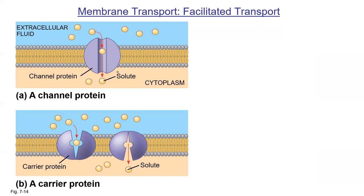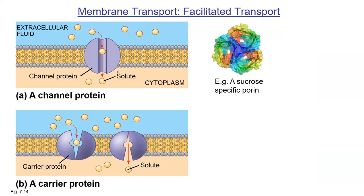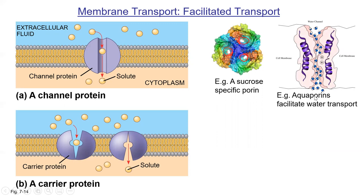Channel proteins are essentially holes custom-built for a specific molecule. For example, a sucrose porin has holes the right shape and size for sucrose, with a polar environment inside that channel matching sucrose's polarity. Aquaporins are special channels for water — some cell types need water to move faster than it can diffuse, so these proteins allow water to transverse the membrane because the channel is the right size and polarity for water molecules.